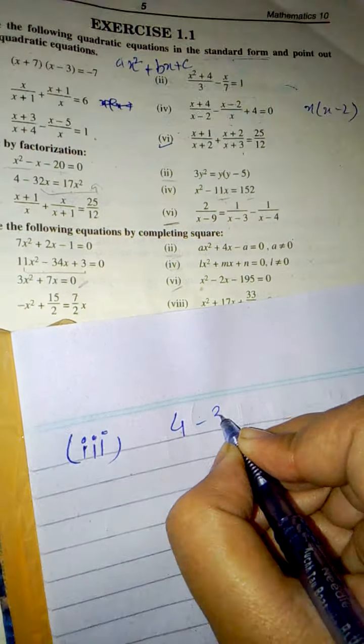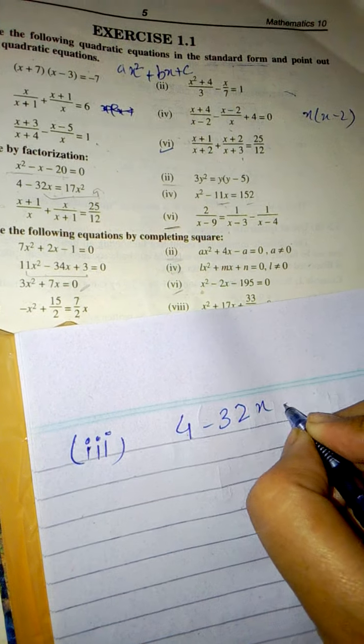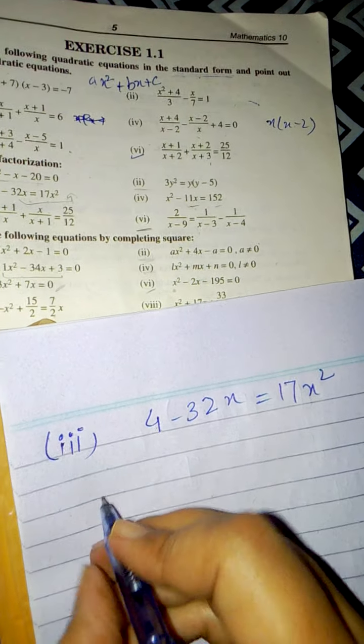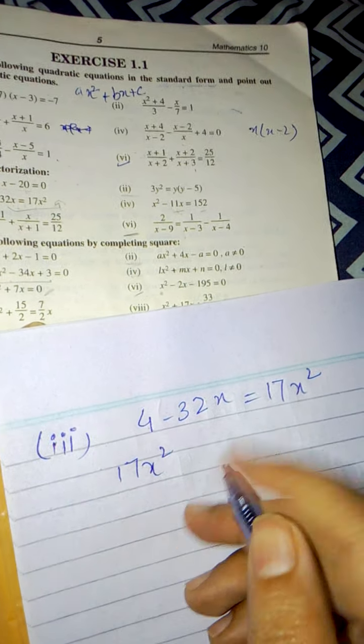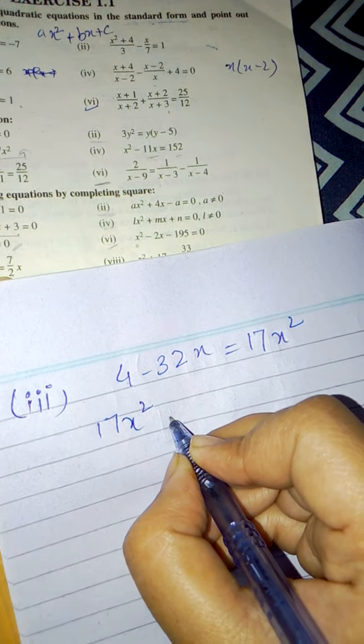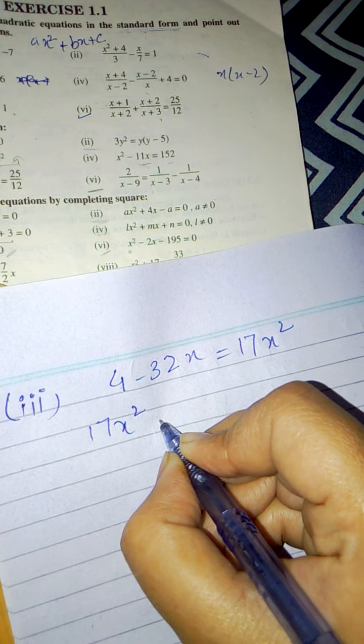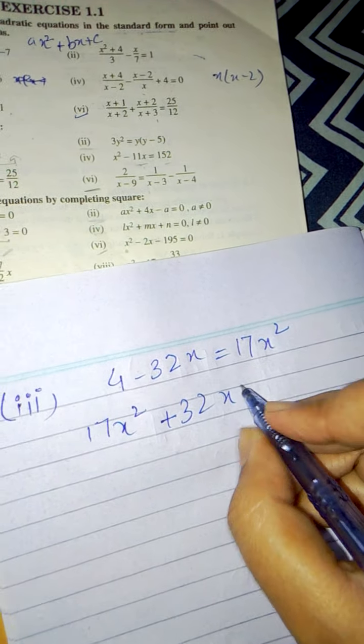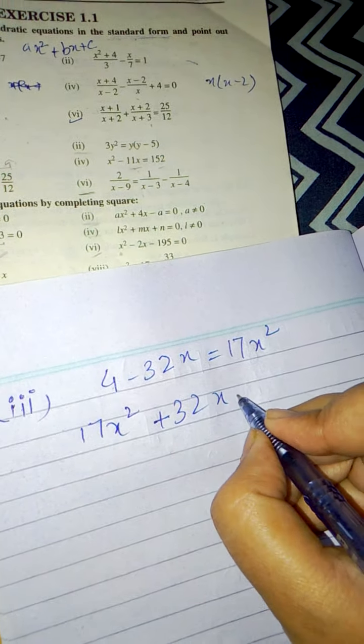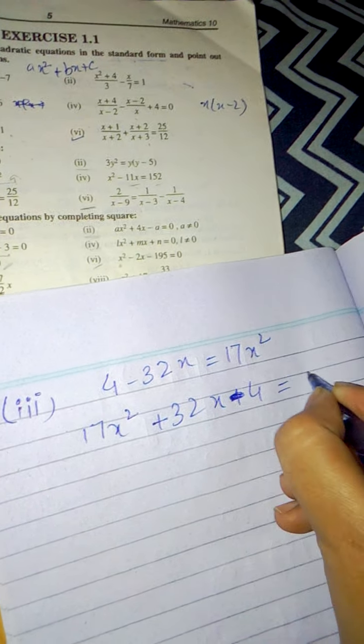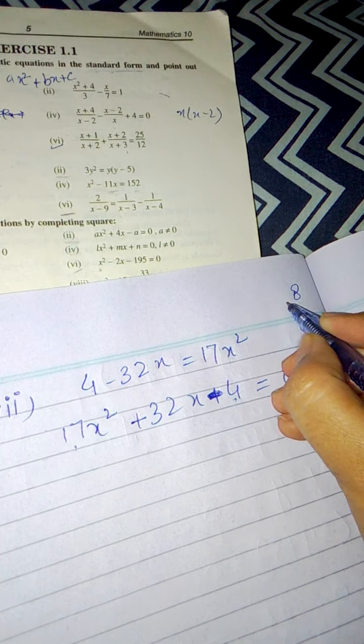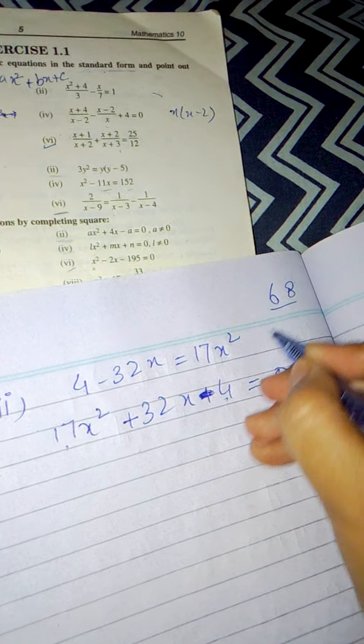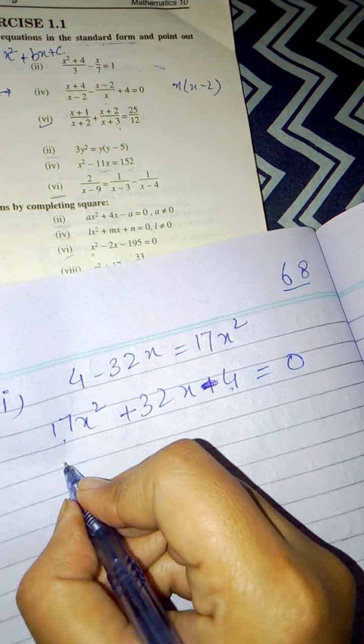Four minus 32x squared equals 17x squared. To make the standard form, I'll take terms to the other side because I want the x squared term to be positive. What will it result? Minus 32x squared plus becomes 17x squared, and that is minus. This equals zero. Now look, 17 into 4 is 68.